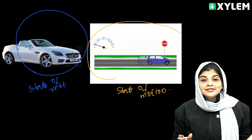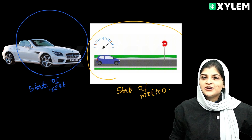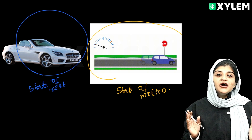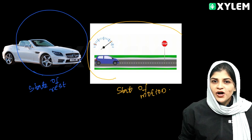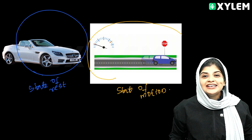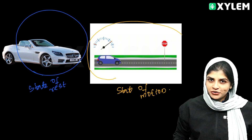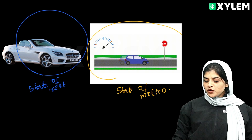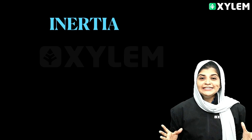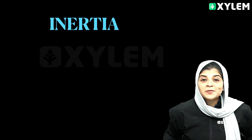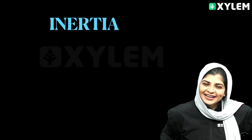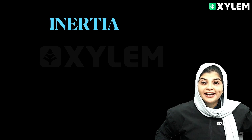It covers equal distance in equal intervals of time — uniform motion means constant velocity. So here we studied about two situations: state of rest and state of uniform motion. Now we are moving to our topic: inertia. Inertia — we can call it 'muddy laziness,' that is, physics laziness.